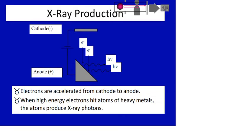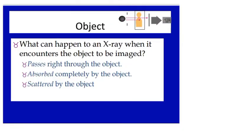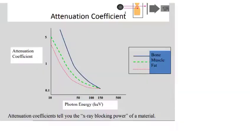In the X-ray production system, electrons are accelerated from cathode to anode, and when high-energy electrons hit atoms of heavy metals, the atom produces X-rays. When the X-ray encounters the object to be imaged — in our case the human body — three things can happen: it can pass right through the object, it can be absorbed completely by the object, or it can be scattered by the object.